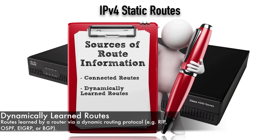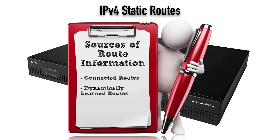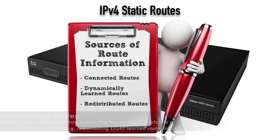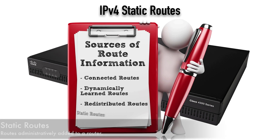We might have dynamically learned routes. We might be using a routing protocol such as RIP, OSPF, EIGRP, or BGP — that's another way routes can be injected into the IP routing table. And sometimes, a CCNP topic not covered at the CCNA level, we could have redistributed routes. For example, a router running both EIGRP and OSPF could take an EIGRP-learned route and redistribute it into OSPF to advertise to OSPF neighbors. But the focus of this video is on static routes.